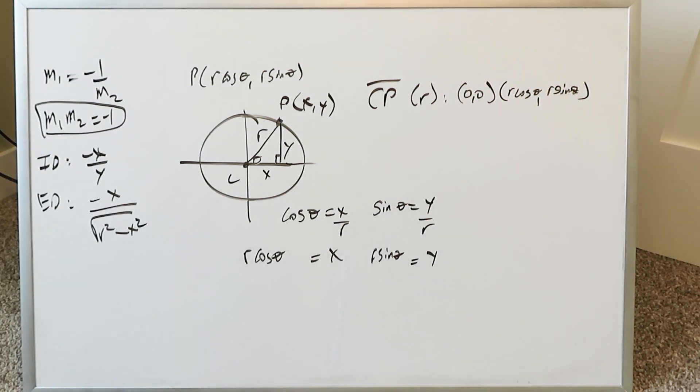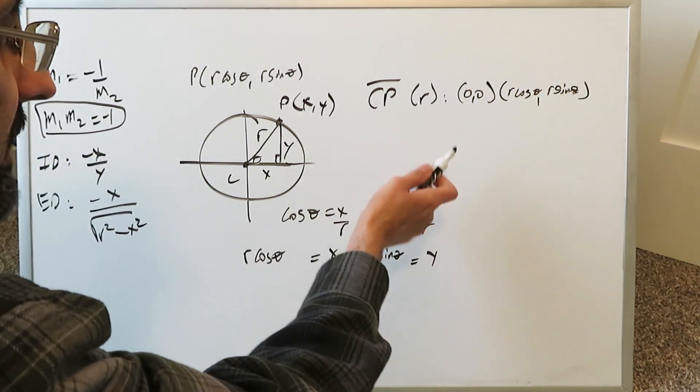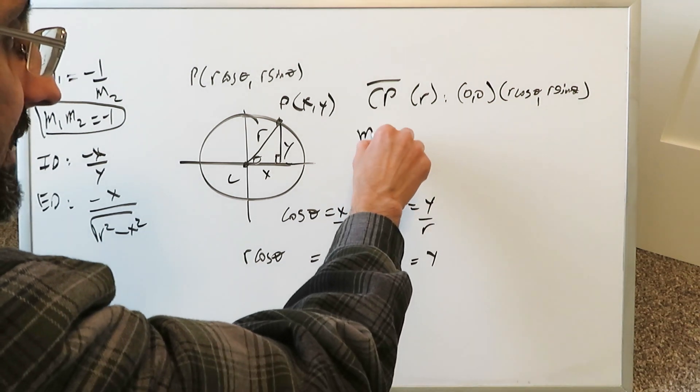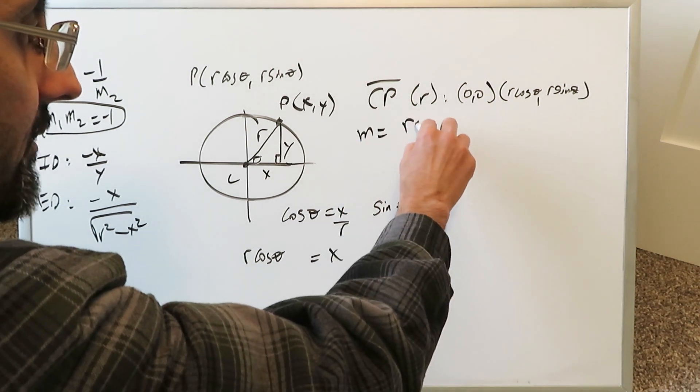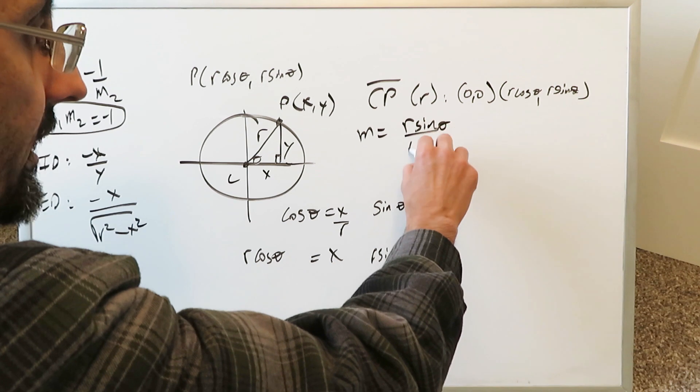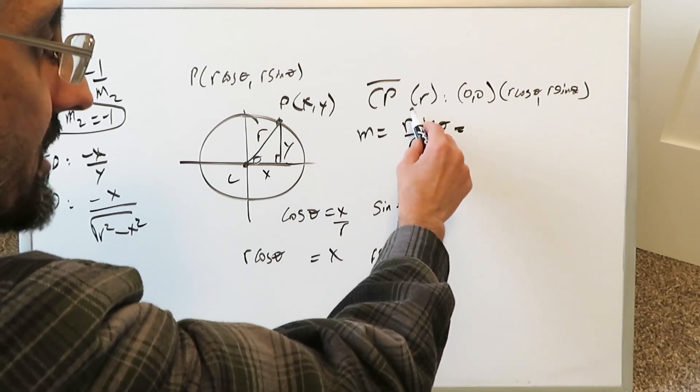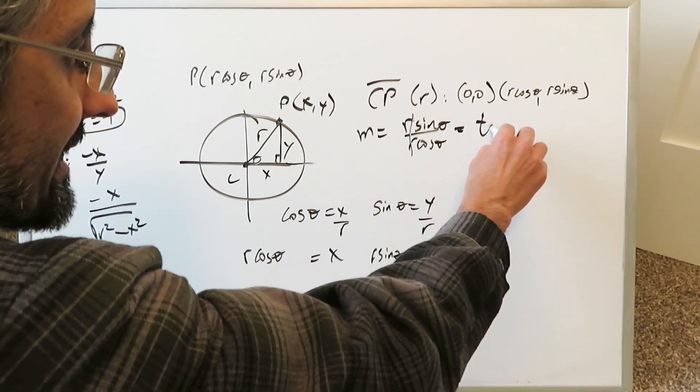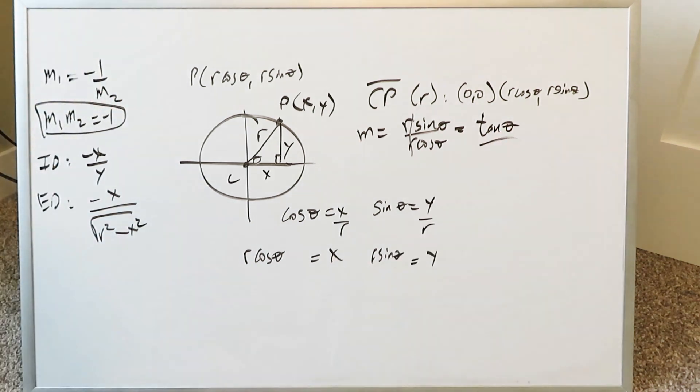These are the points that it goes through. If you utilize the formula for slope y2 minus y1 divided by x2 minus x1, you have the values right there. You'll have r sine theta divided by r cosine theta, and you'll figure all of this out, cancel things out, and you'll get a tangent theta order as being the slope of CP. The segment CP, the radius, is tan theta.